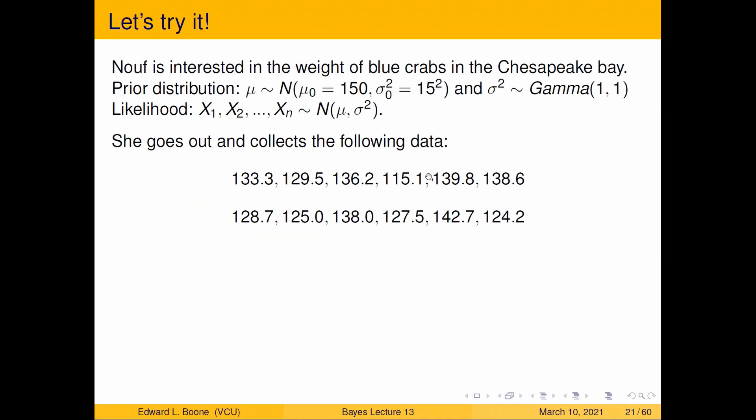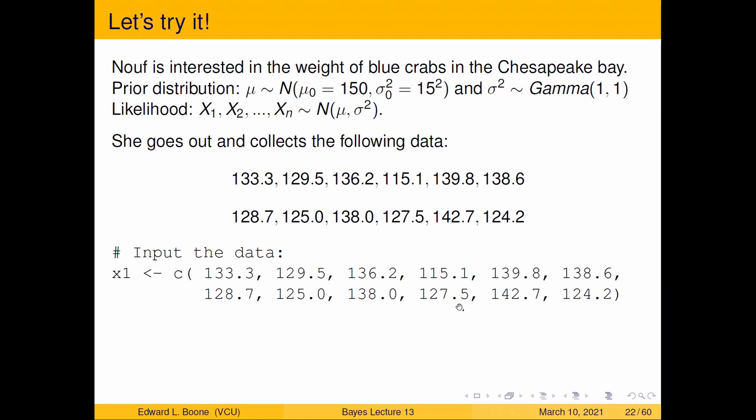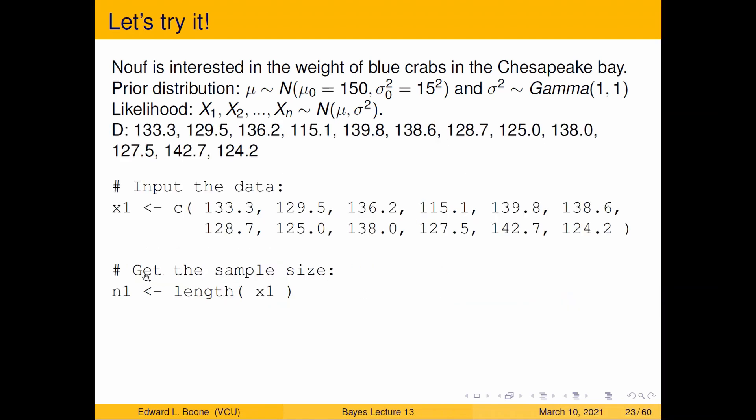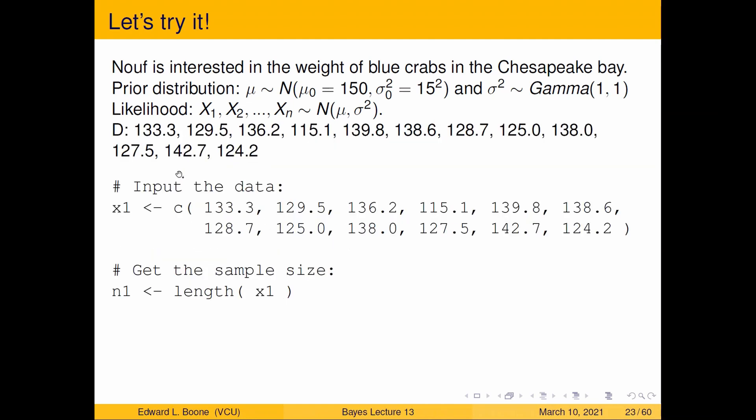Alright, so now we can prepare the data to put it into the model. So we've got a model, we've written it out, it's sitting in our working directory. She goes out and collects some data. Here's the data she collected. I'm going to put this data into x1, and I'm using x1 because it's the same as the x1 here. Things should match up, otherwise things can get ugly. The next thing we need to do is find out how many there are. So we're going to have n1, which is the length of x1. Then we're going to put the data together in a list so it knows which ones to hand off to JAGS.